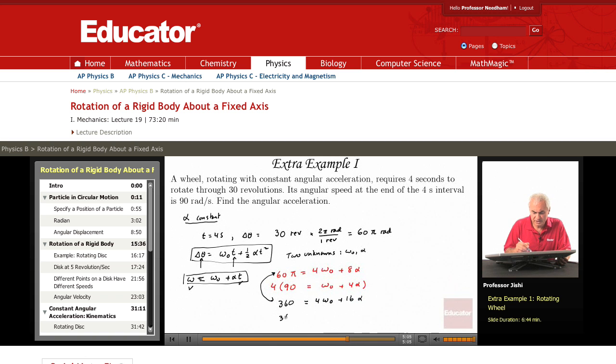So I get 360 minus 60 pi. So I'm left with 8 alpha. Therefore alpha is 360 minus 60 pi divided by 8.